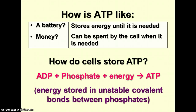ATP is the molecule that cells use to transfer energy for various cellular activities. ATP is like a battery because it stores energy until it's needed and can be recharged. It's also like money because it can be spent by the cell when needed. Cells store energy in the unstable covalent bond between the phosphates. That concludes this section of notes about energy and enzymes. Be sure to write a summary of the notes in your notebook and be prepared for your test on Tuesday.